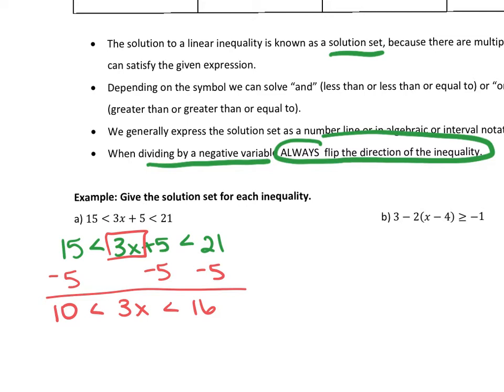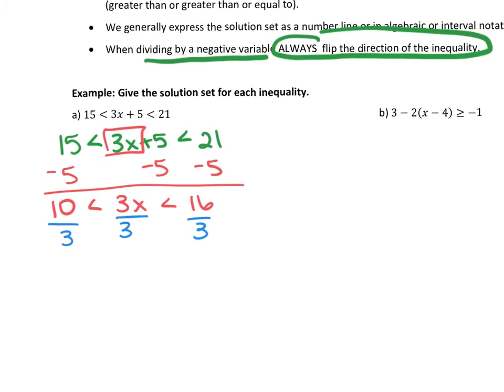Then we still want to get X by itself. To undo the multiplication, I need to do division, so I divide everything by three. When I do that, my solution set is X is in between 10/3 and 16/3.